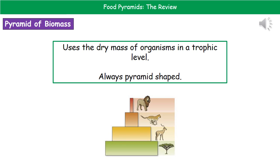The second type of pyramid is the pyramid of biomass. To draw a pyramid of biomass, we need to know the dry mass of the organisms in a trophic level. By using the dry mass, we always end up with a pyramid shape.